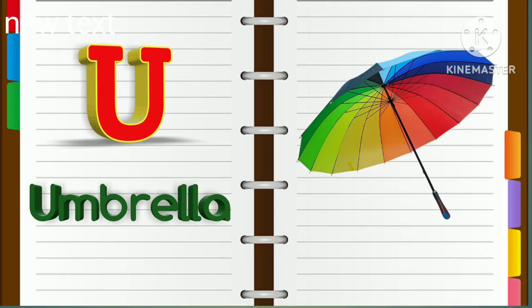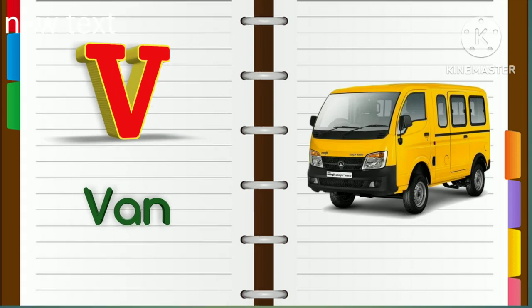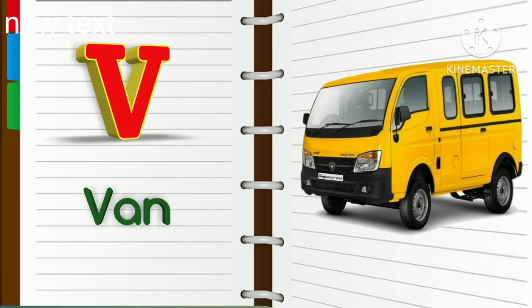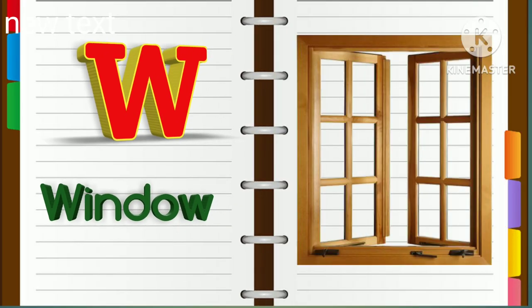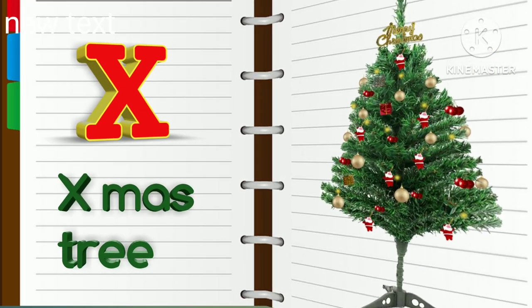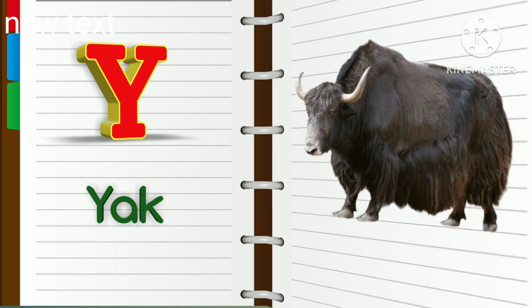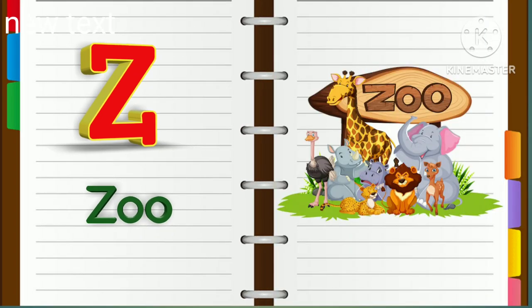U. U for umbrella. V. V for van. W. W for window. X. X for ex-mastery. Y. Y for yak. Z. Z for zoo.